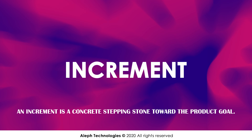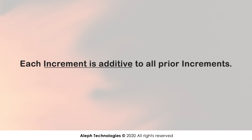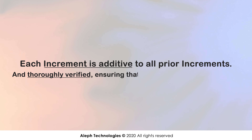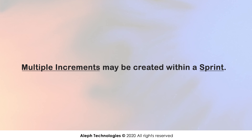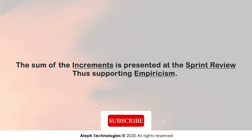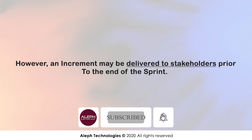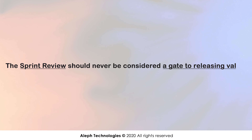Increment. An increment is a concrete stepping stone toward the product goal. Each increment is additive to all prior increments and thoroughly verified, ensuring that all increments work together. In order to provide value, the increment must be usable. Multiple increments may be created within a sprint. The sum of the increments is presented at the sprint review, thus supporting empiricism. However, an increment may be delivered to stakeholders prior to the end of the sprint. The sprint review should never be considered a gate to releasing value.